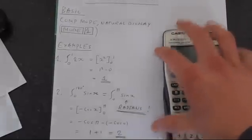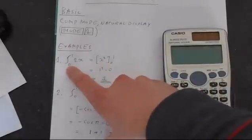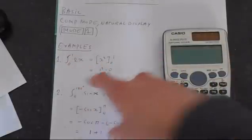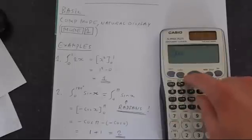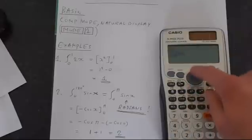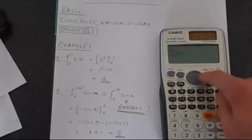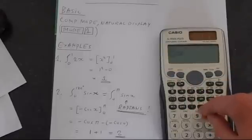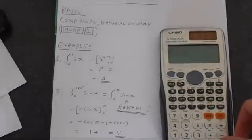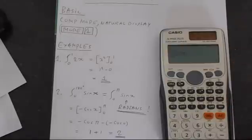So the first example, just a very simple one, integrating between 0 and 1, 2x. So the integrating button is here, and you just use the arrow keys to move around. So 0 and 1, and then we need, here we need 2, then alpha followed by x equals, and that gives us 1.